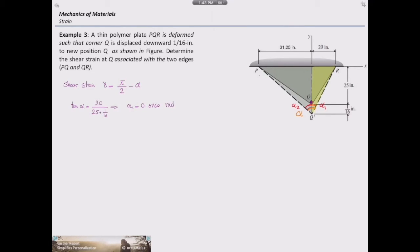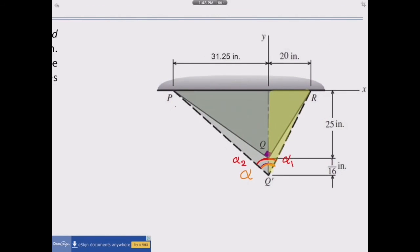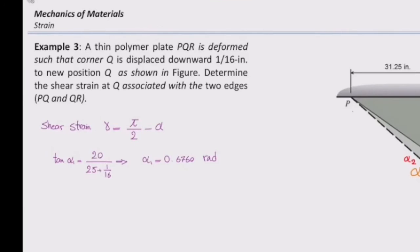And in the second case, I need to consider the left triangle. Alpha 2 in this case is 31.25, the top length, divided by 25 and 1/16. So tangent of alpha 2 would be this one.